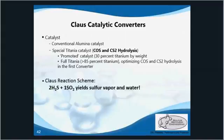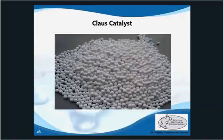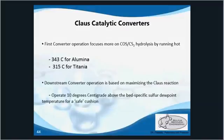Titania promotes hydrolysis of COS and CS2 but is more sensitive to contaminants and deactivation mechanisms like high heat. In the first converter we recommend mostly titania with a good bottom layer, plus six inches to a foot of alumina on top to protect the more sensitive titania. In turnarounds, often all that's needed is to skim the deactivated top alumina without replacing the titania. Catalyst can stay active for up to 15 years if deactivation mechanisms are consistently mitigated.